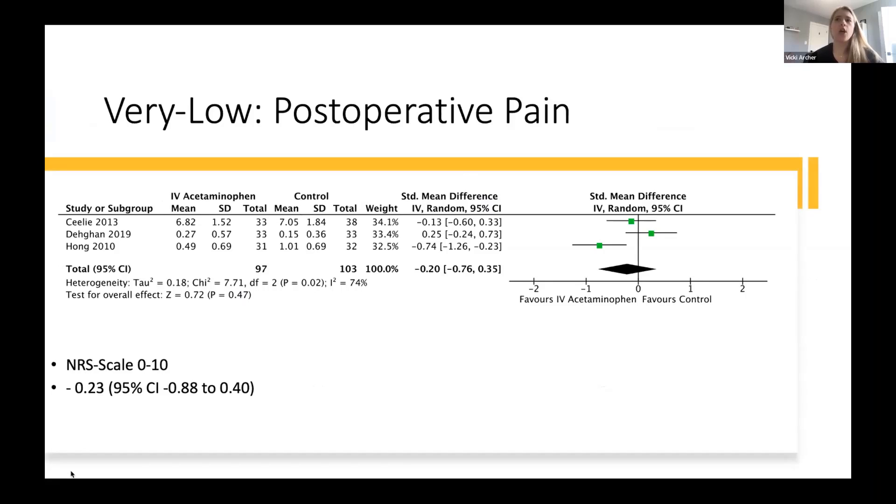Beginning with post-operative pain, we have very low certainty evidence suggesting that there's little to no change in post-operative pain when IV acetaminophen is used in conjunction with opioids compared to opioids alone. The standard mean difference we calculated after aggregating the pain scores is a decrease of 0.20. Using Cohen's criteria, this just meets the criteria for being clinically significant. However, we did back-translate the score into an NRS scale on a scale of 0 to 10 because it's commonly used in this area and easier to interpret. That resulted in a decrease of 0.23 points on a scale of 1 to 10.